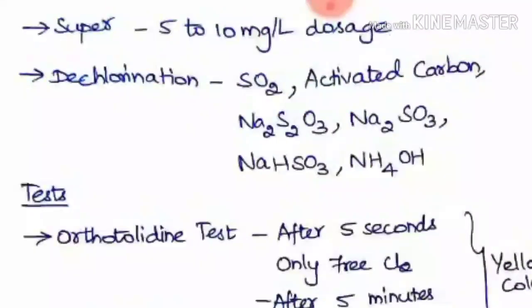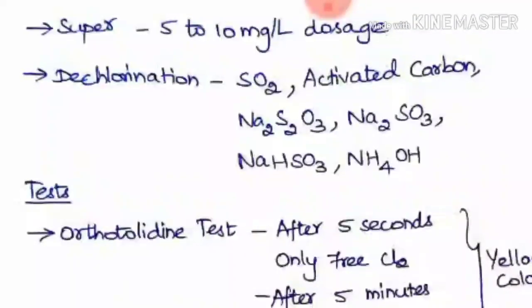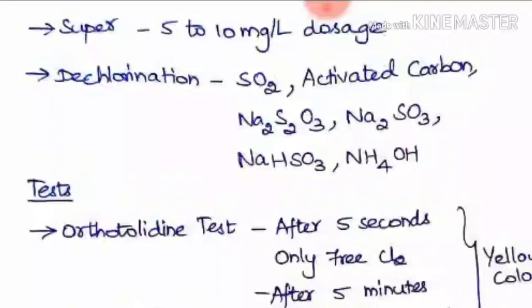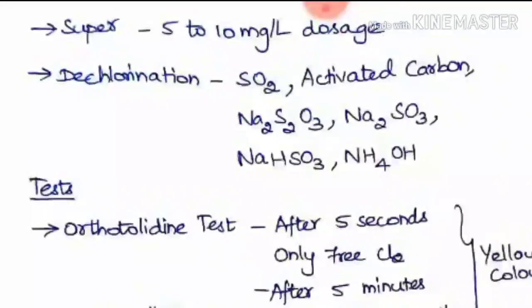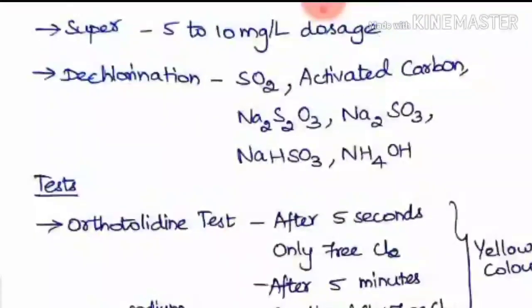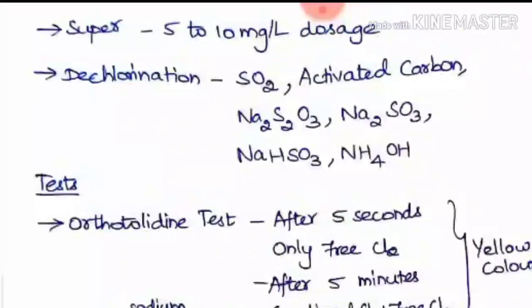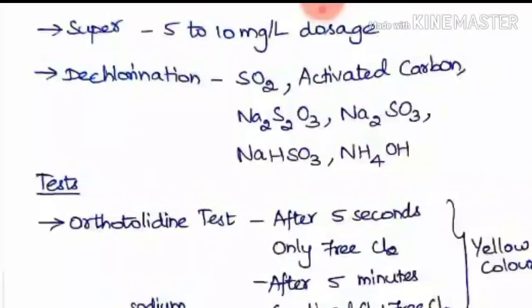Super chlorination uses a high dosage of 5 to 10 mg/L and is used when epidemic diseases have broken out or in very contaminated water sites. De-chlorination is performed when the residual chlorine becomes too high before sending water to the distribution system. It can be achieved by adding sulfur dioxide gas, activated carbon, sodium thiosulphate, sodium sulfate, sodium bisulfate, or ammonia in the form of NH₄OH.